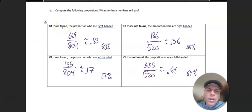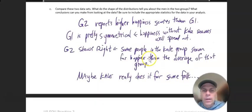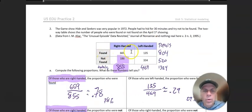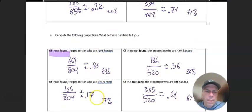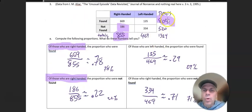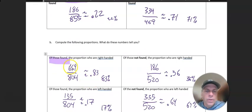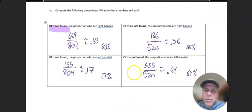Of those found, the proportion who are right-handed. Of those found—so people who were found, that's this total right here. The number who are right-handed: 699. So 699 divided by that total. Here's my answers for these ones—check it out: 0.83, 83%, 0.17, 0.36, 0.64. And again, this should add to 100, this should add to 100, because they're from the same group: of those not found, of those not found.